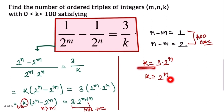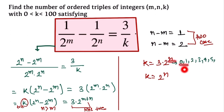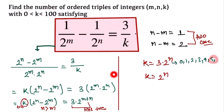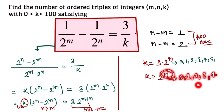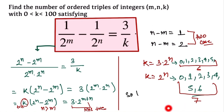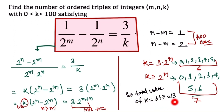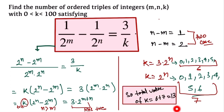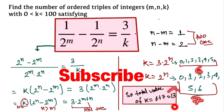Now we find the possible values of n such that k lies between 0 and 100. For Case 1, k equals 3 times 2^n: n can be 0,1,2,3,4,5, giving 6 values. For Case 2, k equals 2^n: n can be 0,1,2,3,4,5,6, giving 7 values (since 2^7 = 128 exceeds 100). Therefore, the total number of valid values of k is 6 plus 7, which equals 13. That is our final answer.